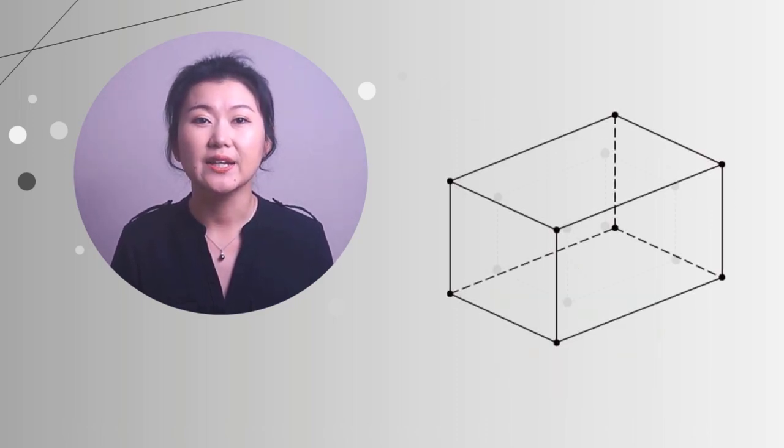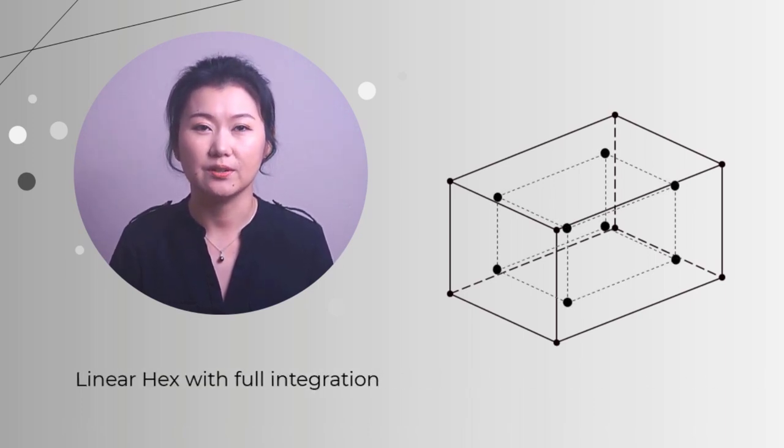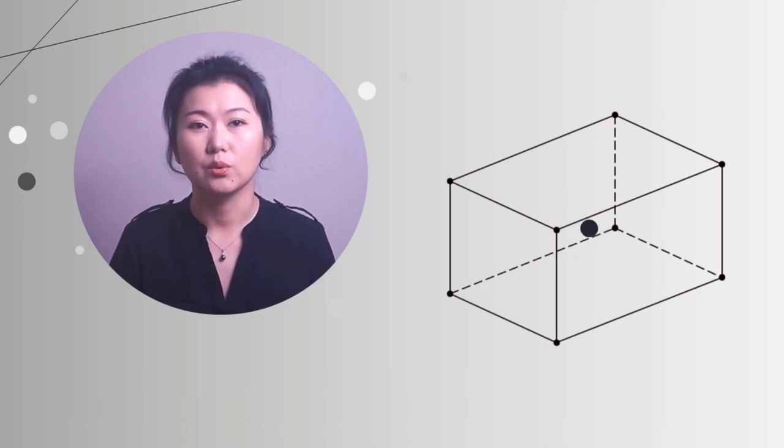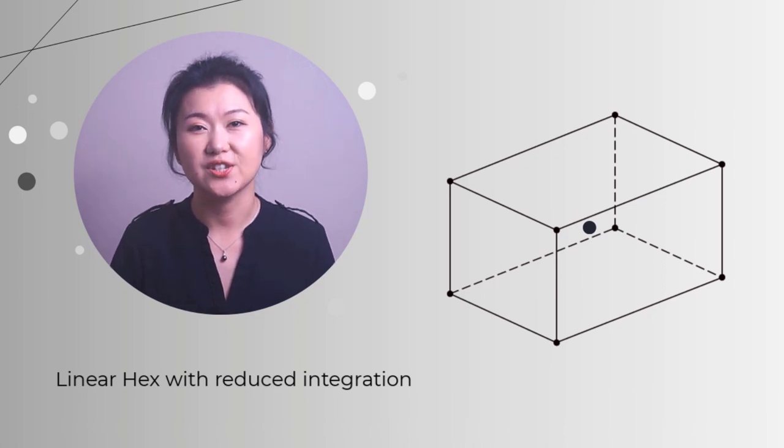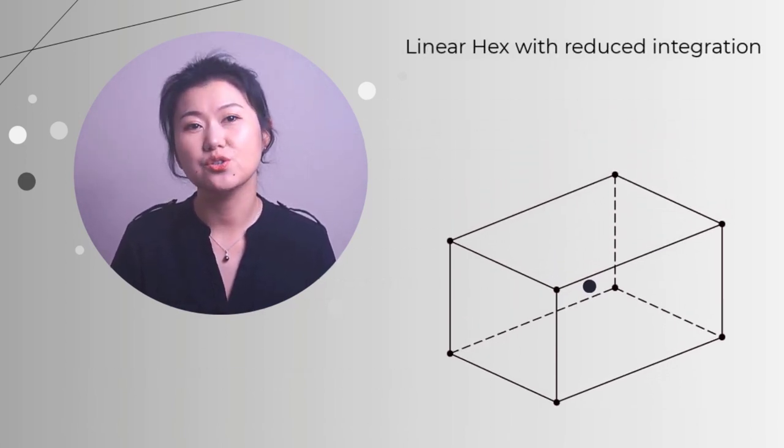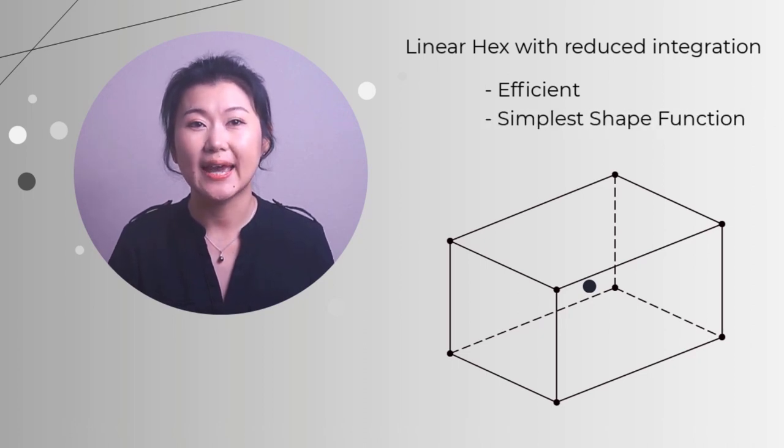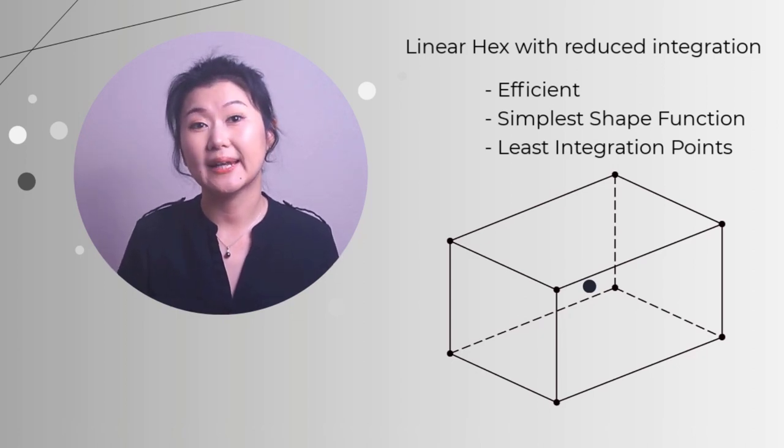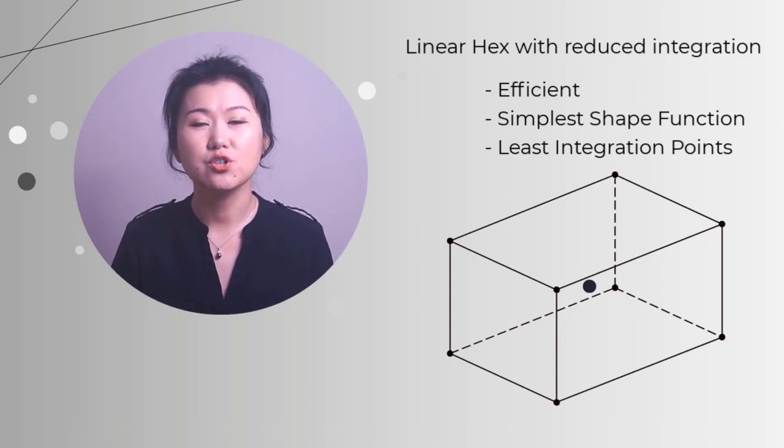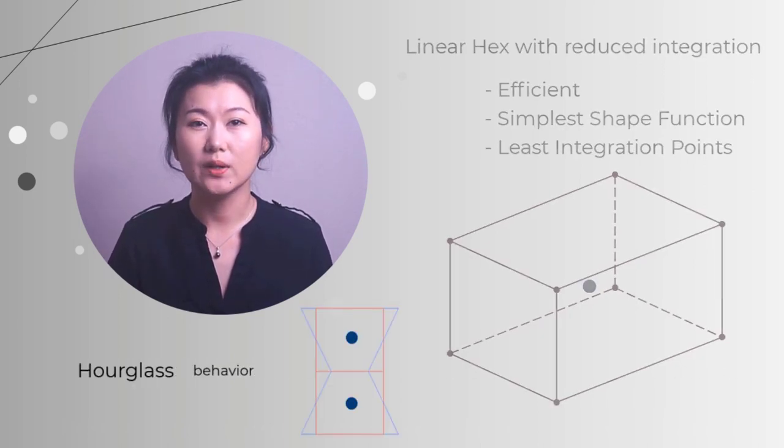For a linear hex element, if eight integration points are used in the volume, we call it a linear hex with full integration. If only one integration point is used, we call it a linear hex with reduced integration. In finite element applications, linear hex with reduced integration is usually the first option an engineer will choose, because obviously it's the most efficient one since it uses the simplest shape function and least number of integration points. However, we should always be careful with hourglass behavior for such type of element.